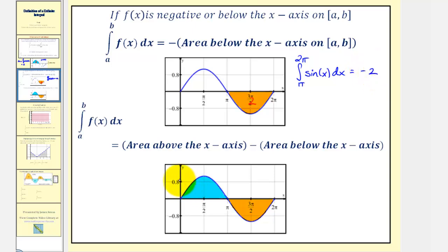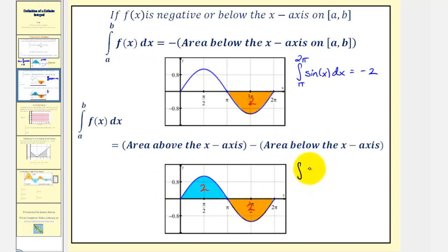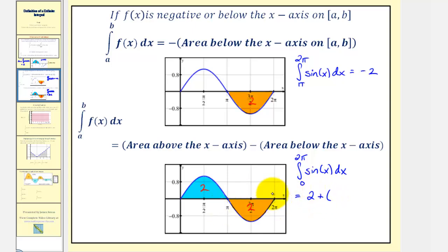If we have a function that's both positive and negative — for example, the sine function on the closed interval from zero to two pi — the value of the definite integral over that interval equals the area above the x-axis minus the area below the x-axis. By symmetry, each region is two square units, so the integral of sine x from zero to two pi equals positive two plus negative two, giving us a value of zero.